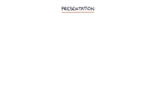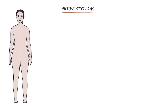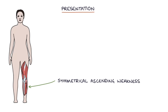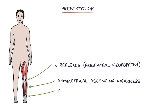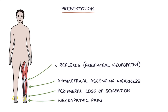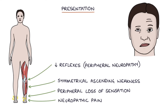So how does Guillain-Barré syndrome present? It presents with a symmetrical ascending weakness which starts from the feet and moves up the body. There will be reduced reflexes because it's a peripheral neuropathy. There may be peripheral loss of sensation or neuropathic pain, and it may progress to the cranial nerves and cause a facial nerve weakness as well.